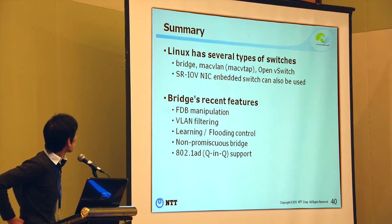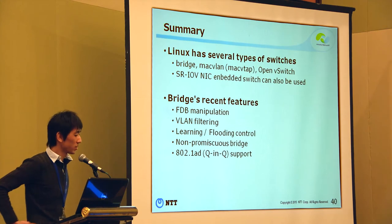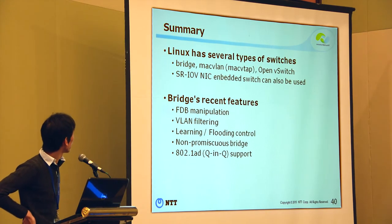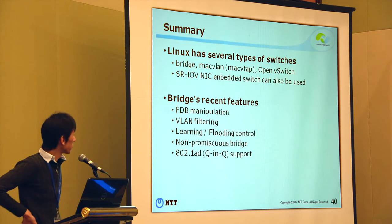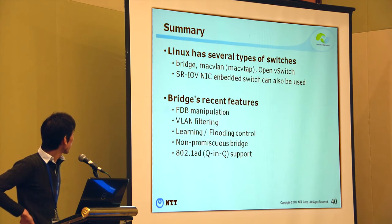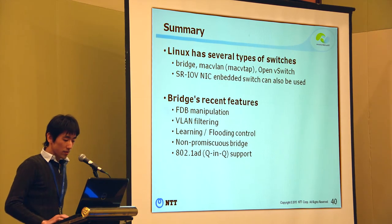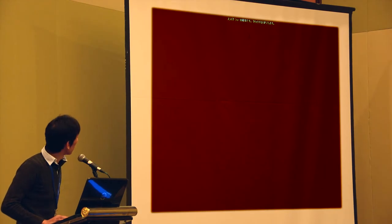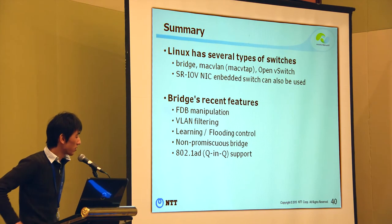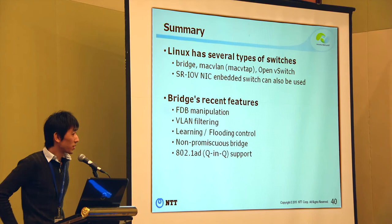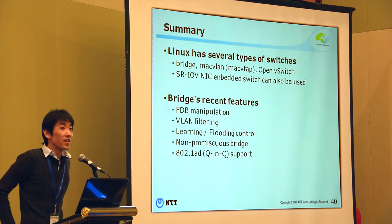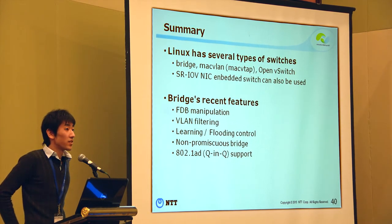In summary, I showed Linux software switches and embedded hardware switches, and bridge's recent features including VLAN filtering, flooding and learning control, non-promiscuous bridge, and 802.1ad. This is the end of part one. Does anyone have any questions?